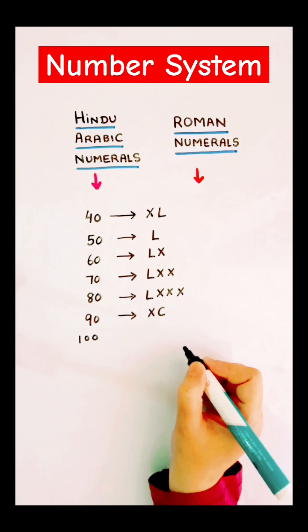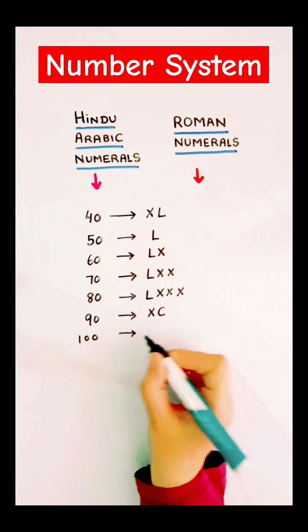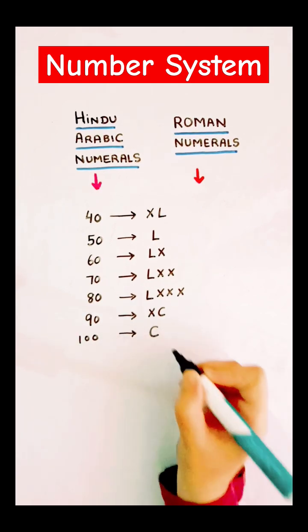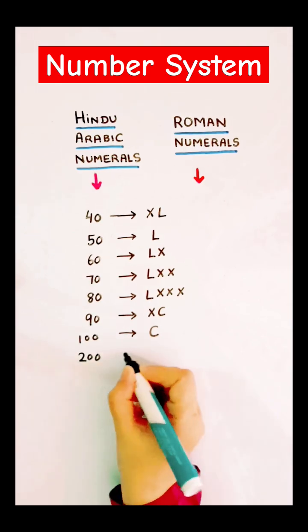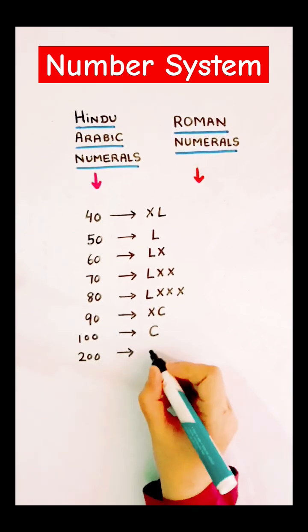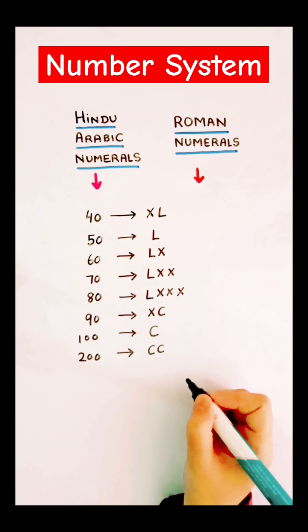Next comes 100. How to write 100? It will be just letter C. 200 is 2 times C.